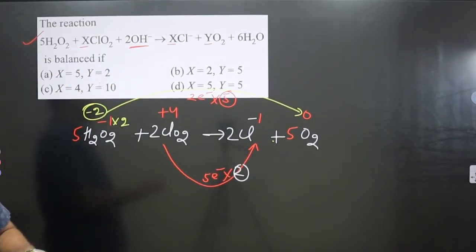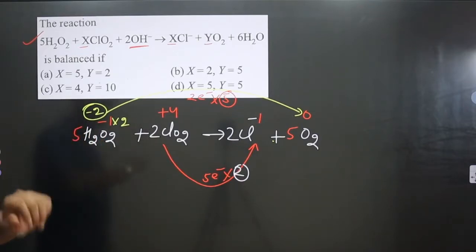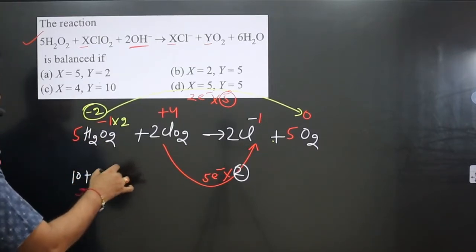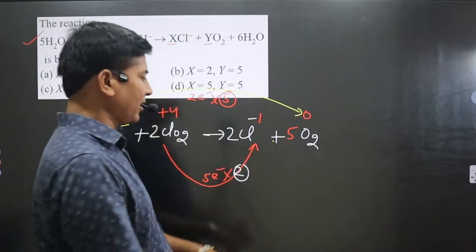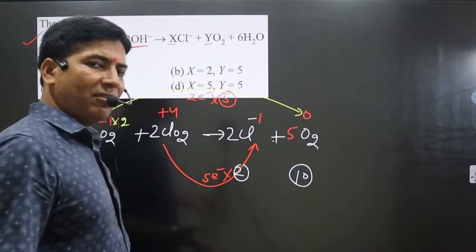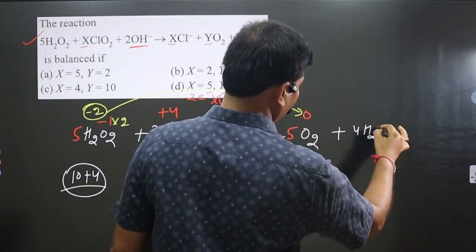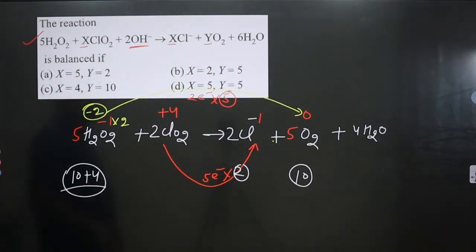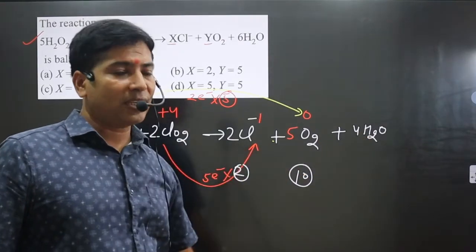We first balance in acidic medium, then convert to basic medium. Count the number of oxygen atoms: 5×2=10 plus 2×2=4, giving a total of 14 oxygens on the left. On the right side there are 5×2=10 oxygens. To balance oxygen, we add 4 water molecules. Now oxygen is balanced. Counting hydrogen: 5×2=10 hydrogens on the left and 4×2=8 hydrogens from the water molecules.